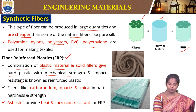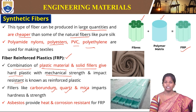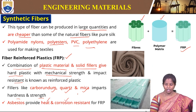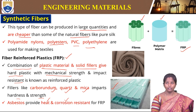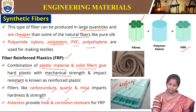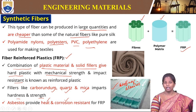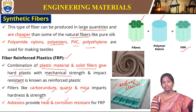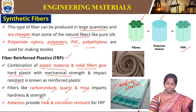Fillers like carborundum, quartz, and mica are used which impart hardness and strength to the plastic. Asbestos provides heat and corrosion resistance. For example, these are roofing materials used for roofing purposes; when mixed with asbestos, it becomes hard and provides resistance to heat, keeping the room cool and avoiding corrosion due to rain and summer. That is why it is a very good application for roofing purposes.